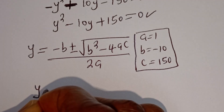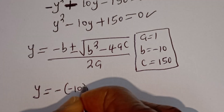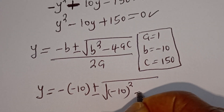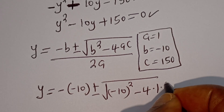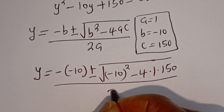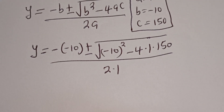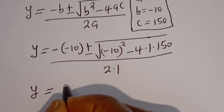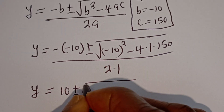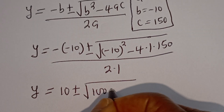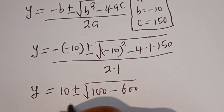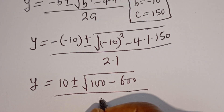Substituting: Y is equal to minus(minus 10) plus or minus square root of (minus 10) squared minus 4 times 1 times 150, divided by 2 times 1. That gives Y is equal to 10 plus or minus square root of 100 minus 600, divided by 2.